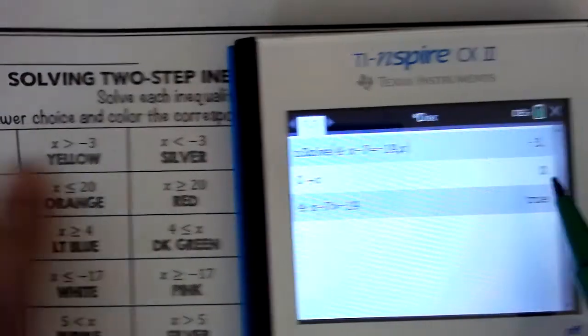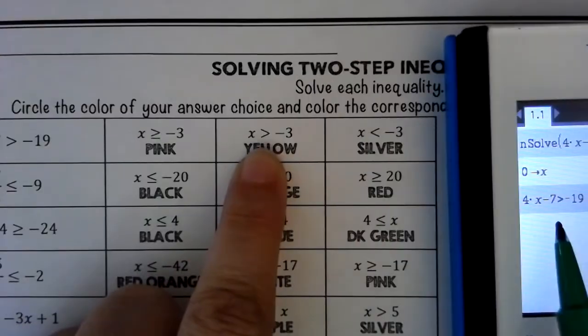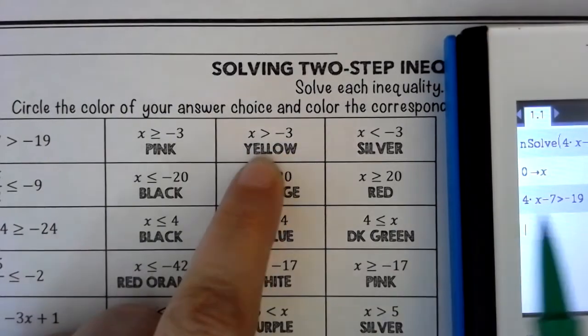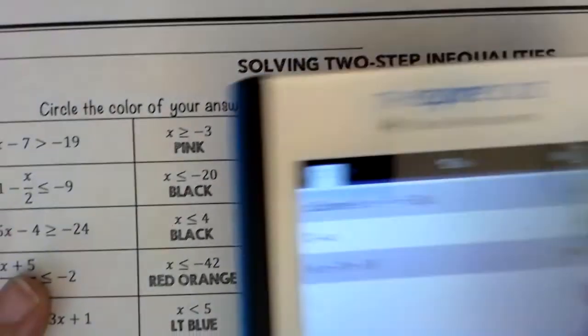So in this case, we're going to have negative 3 as our number, which we already knew because that was on all three of them. And because it says true, we're going to have greater than, the same sign. And therefore for number one, you would do yellow.